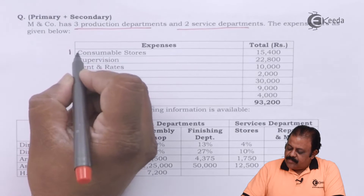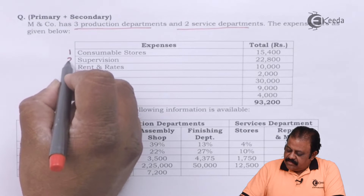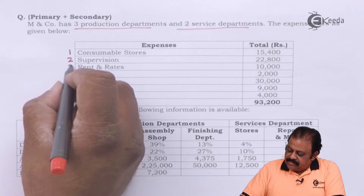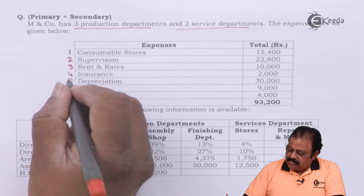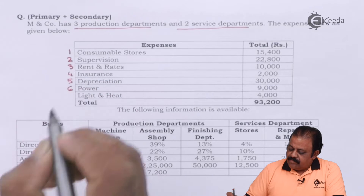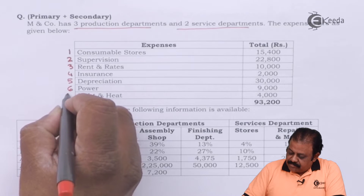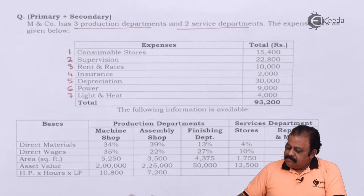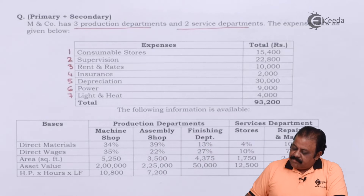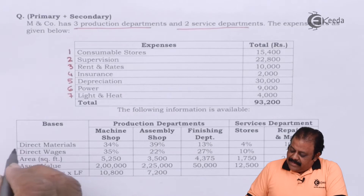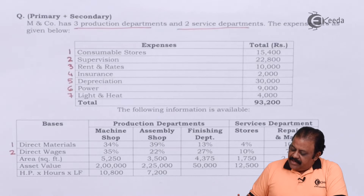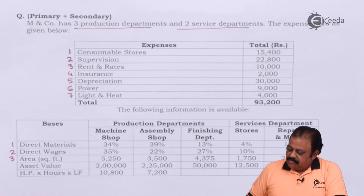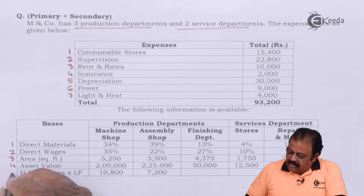The expenses listed are: consumable stores, supervision, rent and rates, insurance, depreciation, power, and light and heat. The following information is available: direct materials, direct wages, area in square feet, asset value, horsepower, and hours.